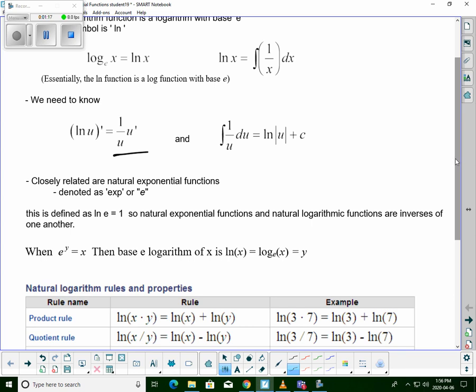But they are inverses of each other, so they're equal to 1. So natural exponential functions and natural logarithm functions are inverses. So when we have e to the y equals x, then the base e logarithm of x is the natural log is equal to log e of x, which is equal to y.